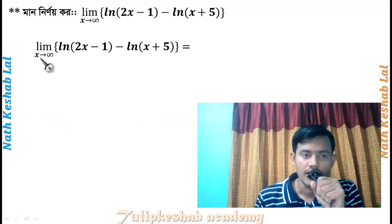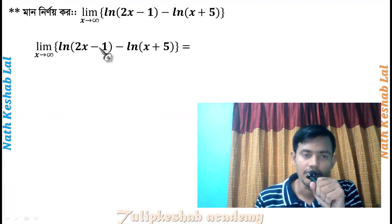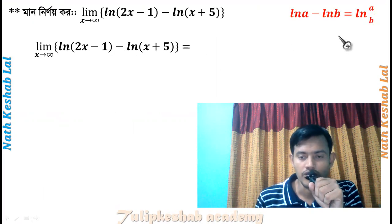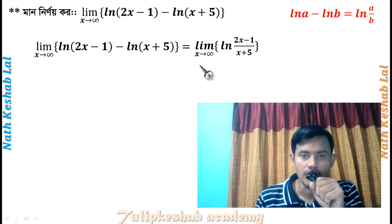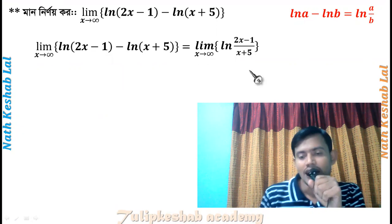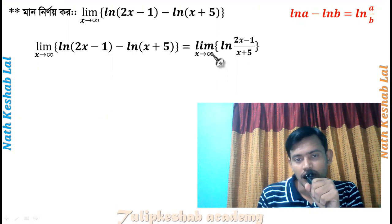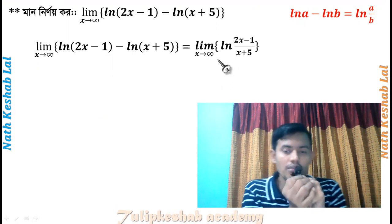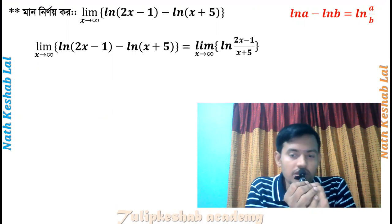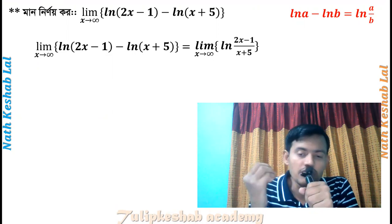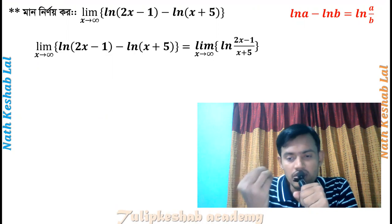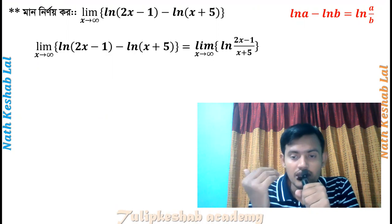See the limit: x tends to infinity of log(2x - 1) minus log(x + 5). Using the log rule: log(a) minus log(b) equals log(a/b). So this becomes log of (2x-1)/(x+5). As x tends to infinity, we analyze this expression.